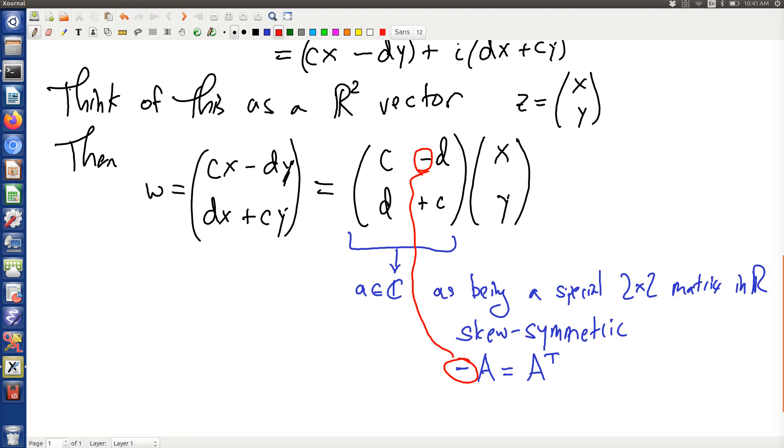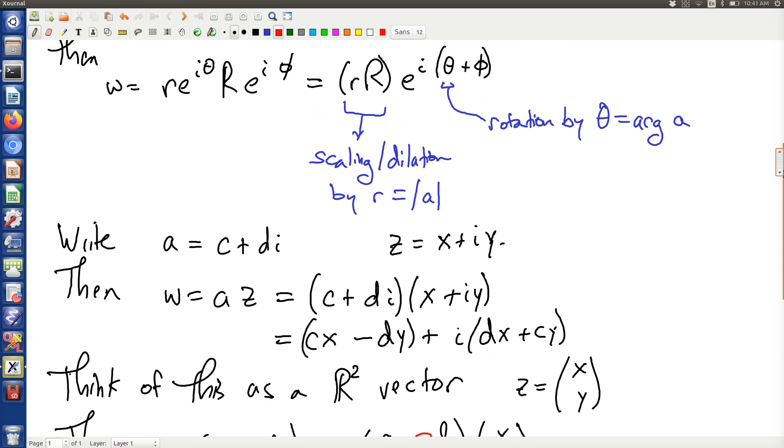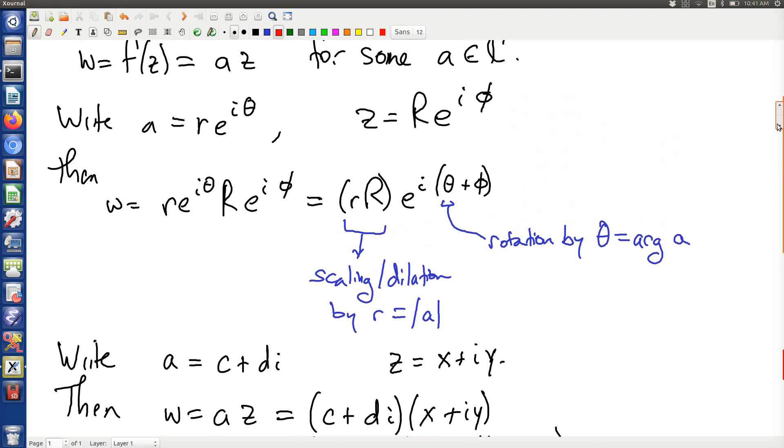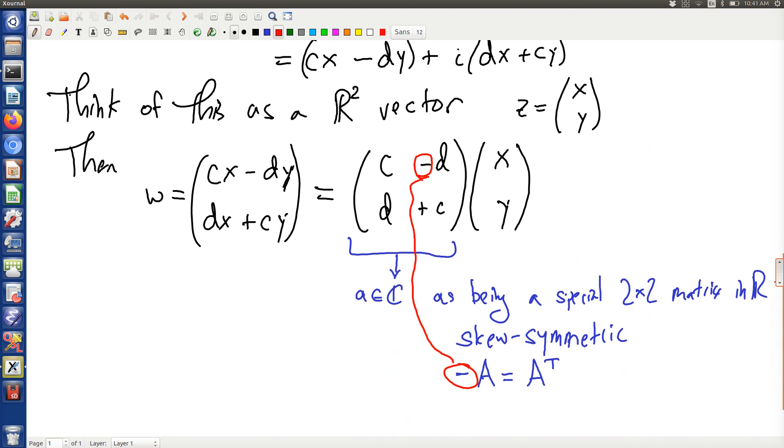So linear transformations, as in multiplication by a complex number, transform the complex plane by scaling and dilation and a rotation, both together. Or you can think of them as multiplication by a skew-symmetric matrix.